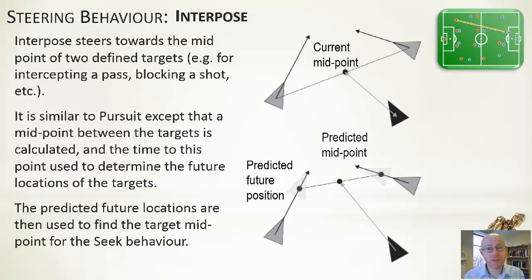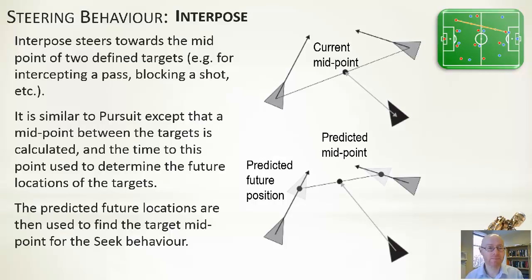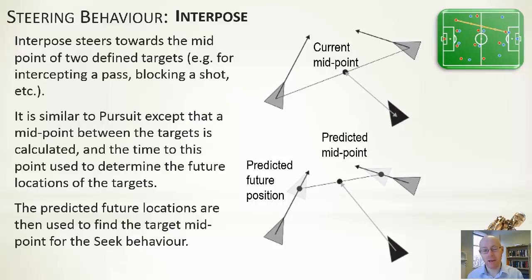Interpose is related: you steer to get to the midpoint between two defined targets — useful for blocking or intercepting a pass, common in sports games. Similar to pursuit, rather than using the targets' current positions we predict their future locations and take the midpoint of those predicted positions as the seek target. Implementation is similar to pursuit, except we're trying to get between two different objects.